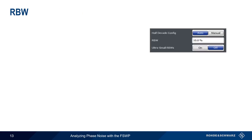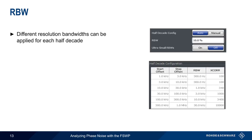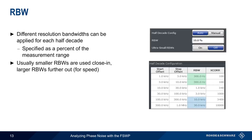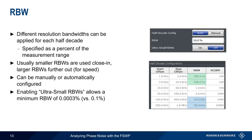Resolution bandwidth also affects phase noise measurements. On the FSWP, different resolution bandwidths can be applied for each half-decade, and these are specified as a percentage of the measurement range. Typically, smaller resolution bandwidths are used closer to the carrier, and larger ones further away, which helps to reduce measurement time. Resolution bandwidth can be configured manually or automatically. The parameter 'ultra-small resolution bandwidths' is used to lower the minimum resolution bandwidth, which can be helpful when measuring very close to the carrier.